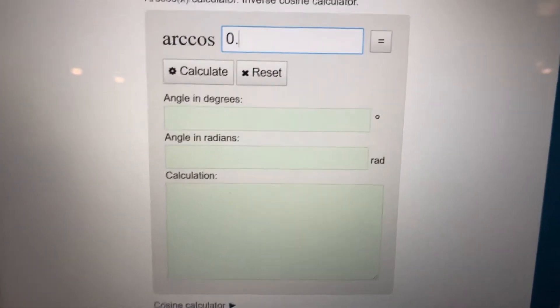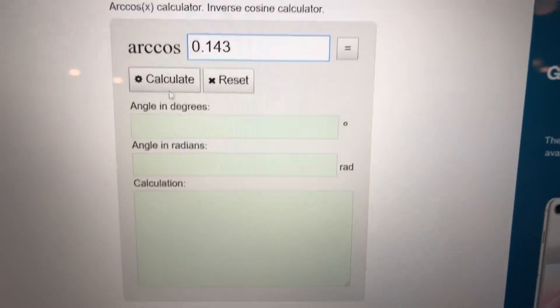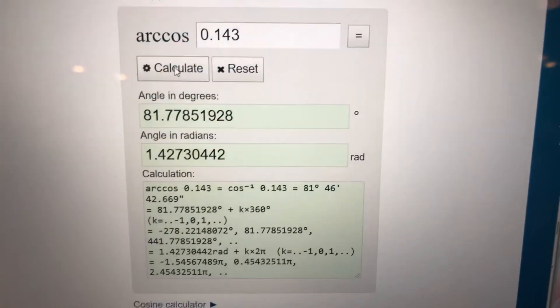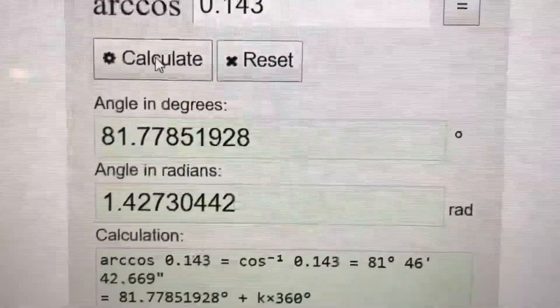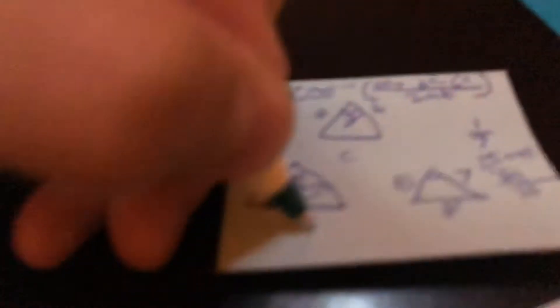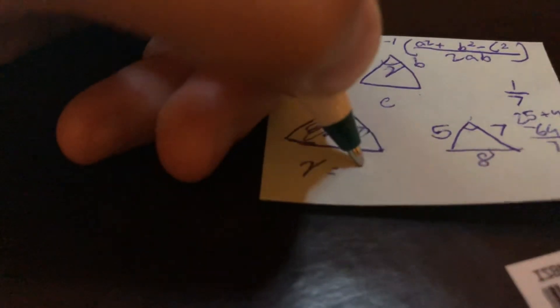Our cosine inverse of 0.143, calculate. To the nearest tenth of a degree, it's going to be 81.8. So I will write on the bottom here: gamma equals 81.8 degrees.